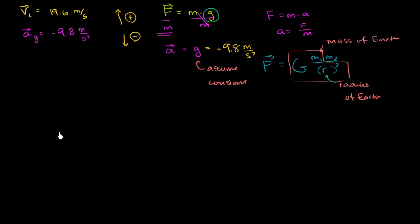I want to plot displacement relative to time. Let's think about how we can derive a formula where we input time as the independent variable and get displacement. We know that displacement equals average velocity times change in time. Right now we have something in terms of time and average velocity, but not in terms of initial velocity and acceleration.